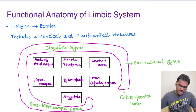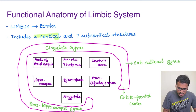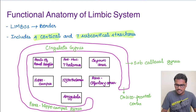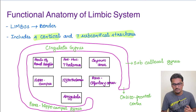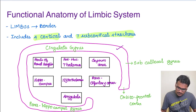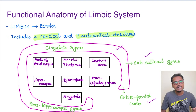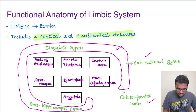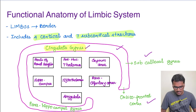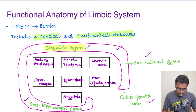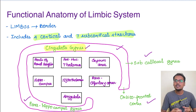Coming to these areas, we have majorly four cortical areas and seven subcortical areas. The cortical areas form the outer rim, drawn here in pink. It has four parts: first, located in the frontal cortex, is the orbitofrontal cortex; then comes the subcallosal gyrus; then the very important cingulate gyrus; and finally the parahippocampal gyrus. These are the four cortical regions.